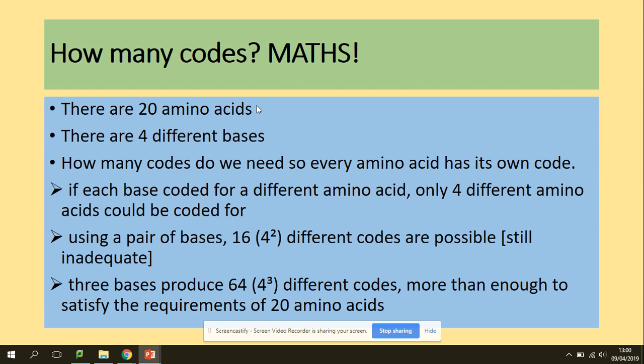So how many codes? In fact, you should remember that we've got 20 different amino acids, and there are four different bases. So how many codes do we need? Every amino acid has its own code. Using a pair of bases, and three bases produce 64 different codes, more than enough to produce those 20 amino acids.